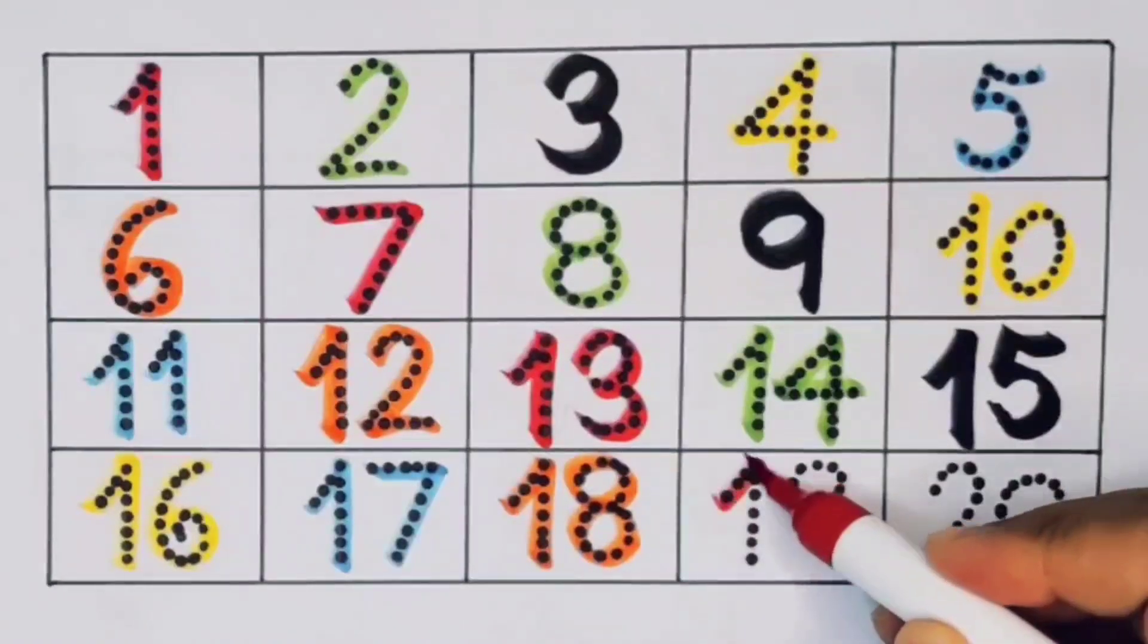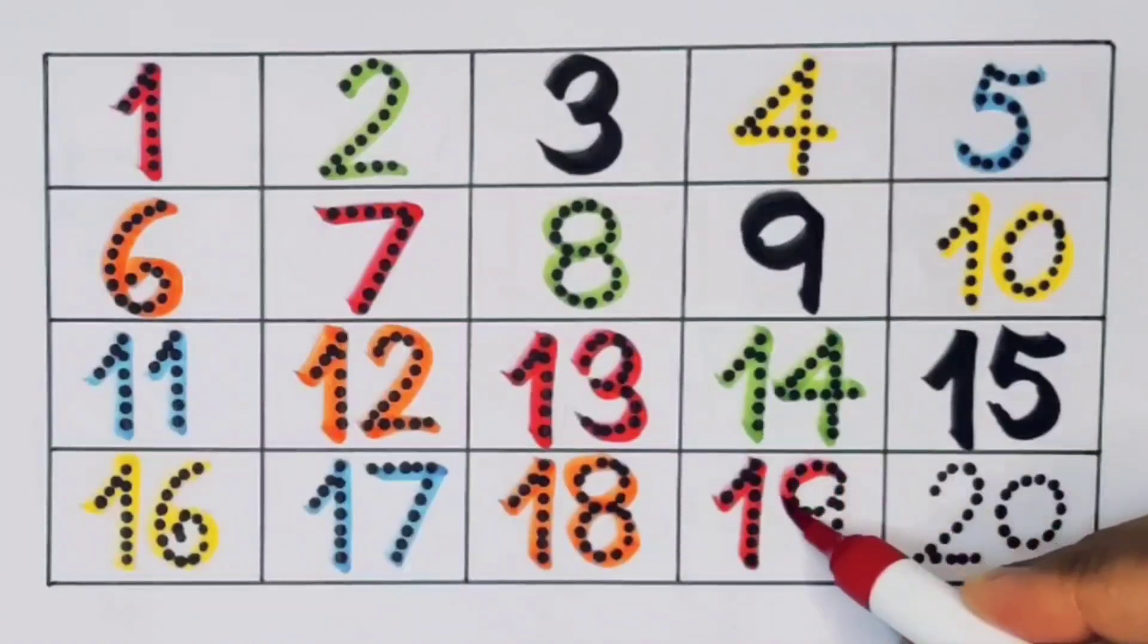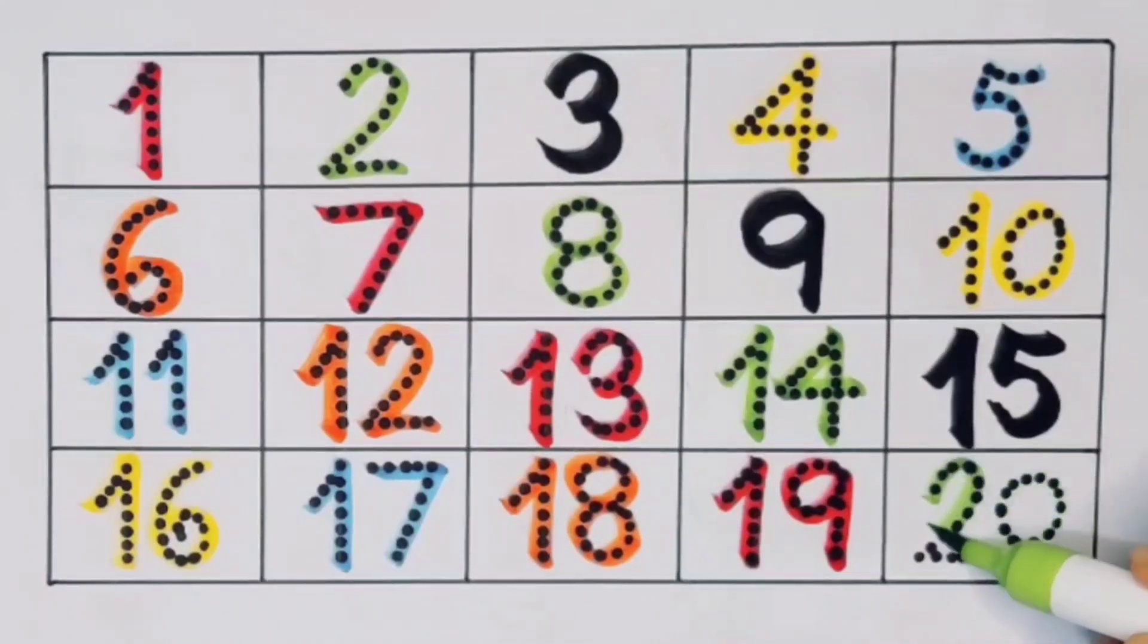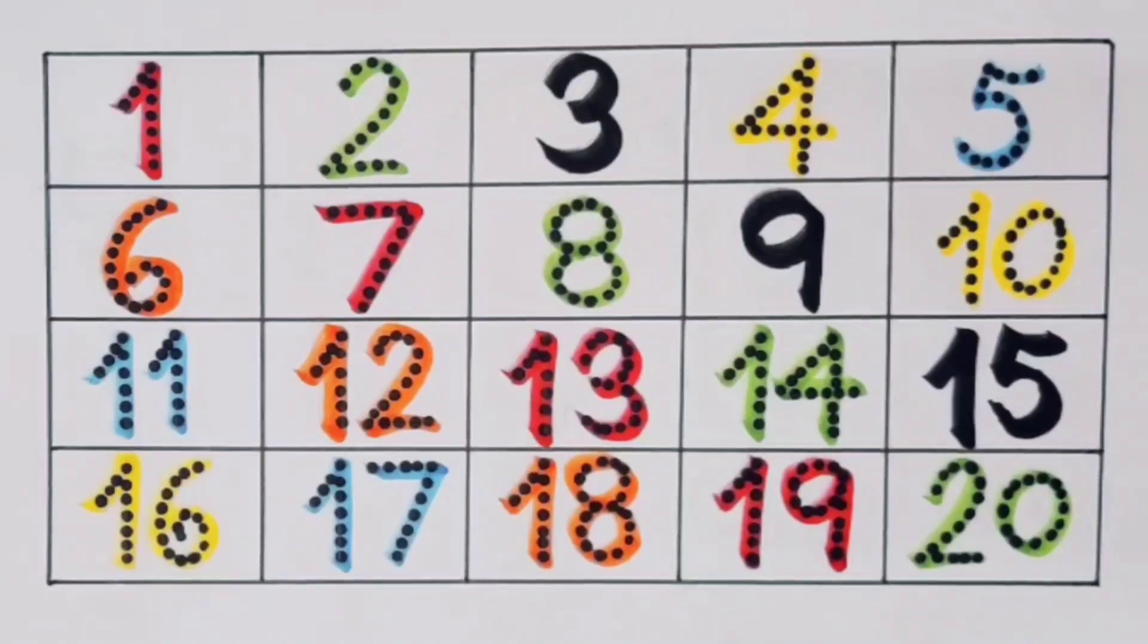Next kids 19. 1. 9. 19. Number 19. Next kids 20. 2. 0. 20. Number 20.